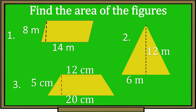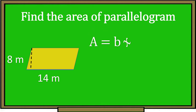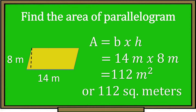Let's check if you got the correct answer. Area of the parallelogram equals base times height. Let's substitute the values: base is 14 meters and the height is 8 meters. Then let's multiply — 14 meters times 8 meters — and the area of a parallelogram is equal to 112 square meters.